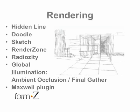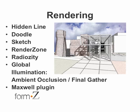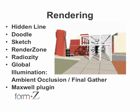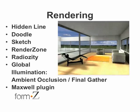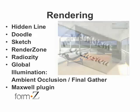Form Z also includes many different rendering display modes such as hidden line, doodle for pencil sketch renderings, and a sketch render mode which allows you to do artistic visualization such as oil painting and stipple-type patterns. There's also Render Zone which allows you to do a full ray trace rendering of your scene, radiosity for accurate lighting calculations, and this is now seamlessly integrated into the new global illumination, which has ambient occlusion and final gathering.